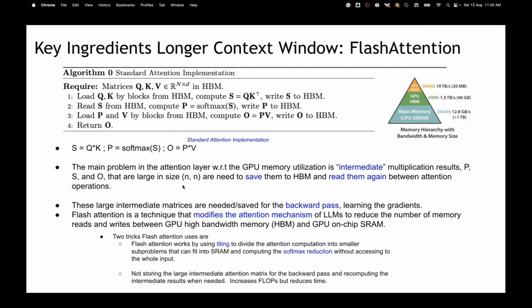Flash attention does two optimizations. First: to calculate softmax, normally the whole output matrix S must be available. But flash attention uses tiling — a mathematical trick where softmax can be computed in small tiles, and the final result is the same as computing softmax on the whole input. Second: instead of storing the intermediate matrices (needed in the backward pass for gradient learning), flash attention recomputes them when needed.